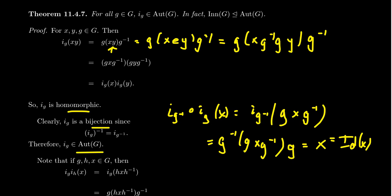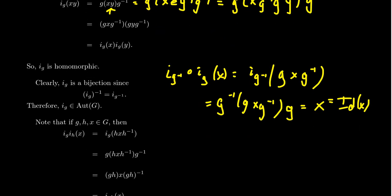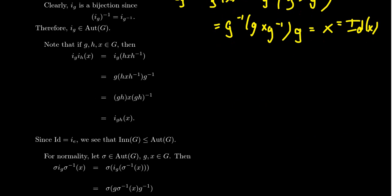So I_G is in fact a bijective homomorphism, meaning it belongs to the automorphism group. Now, why is the collection of all inner automorphisms a normal subgroup? Let's first prove it's a subgroup. The product of two inner automorphisms I_G and I_H — I claim this is the inner automorphism associated to the product GH. So if G and H are two elements of the group, we look at the image of X.